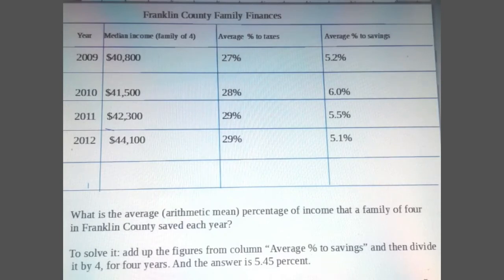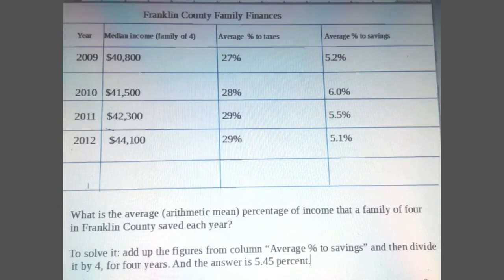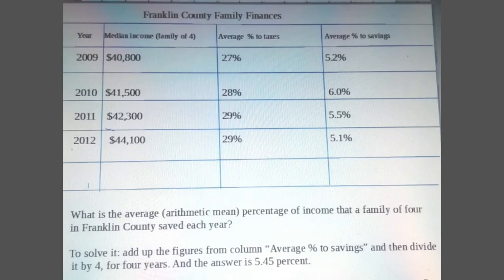In 2010, average percent to taxes is 20% and average percent to savings is 6%. In 2011, the median income is $42,300, average percent to taxes is 29%, and average percent to savings is 5.5%. In 2012, the median income is $44,100, average percent to taxes is 29%, and average percent to savings is 5.1%.